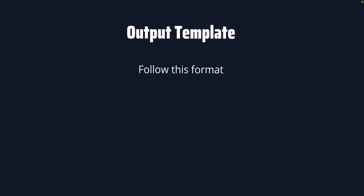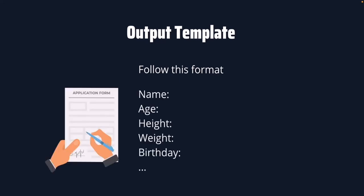The output template is just a format that ChatGPT will follow when giving responses. To indicate the format, we use the words 'follow this format' and then specify it. In a simple example, this format includes a person's name, age, height, weight, and birthday. It's like ChatGPT is filling out a form — that's the basic idea.